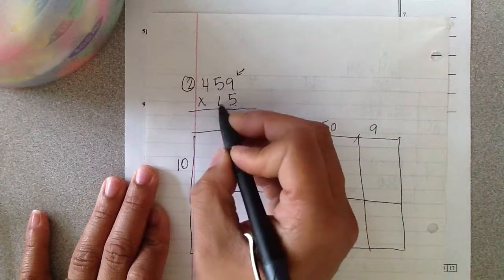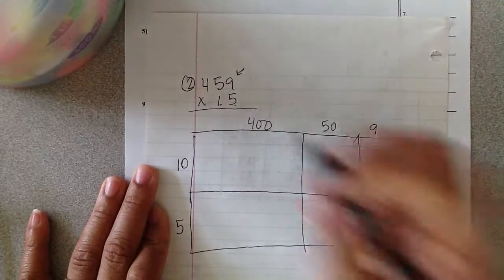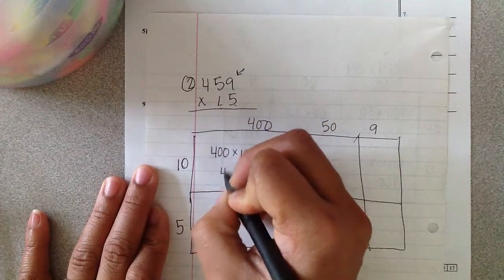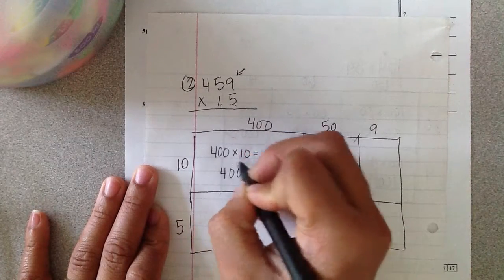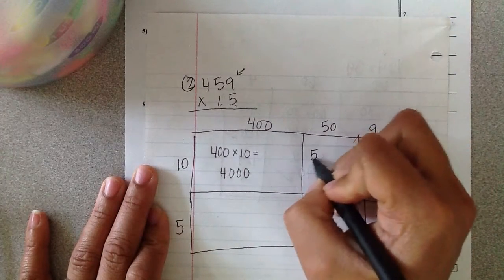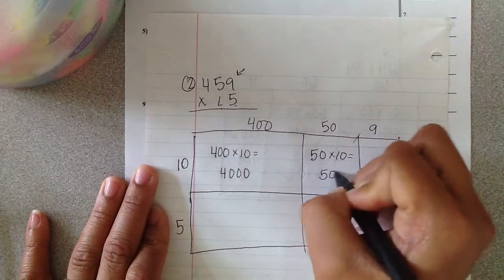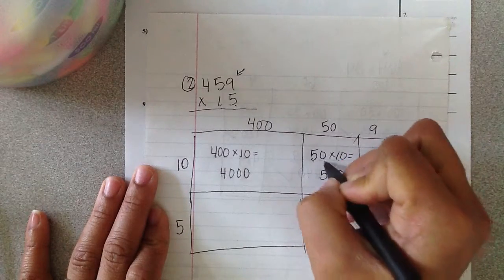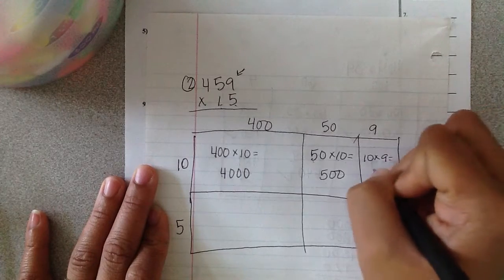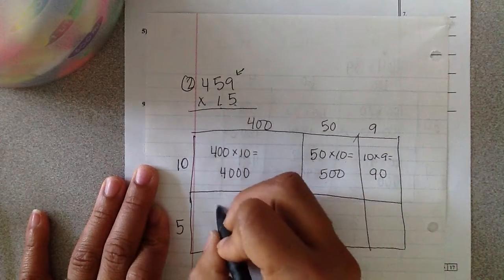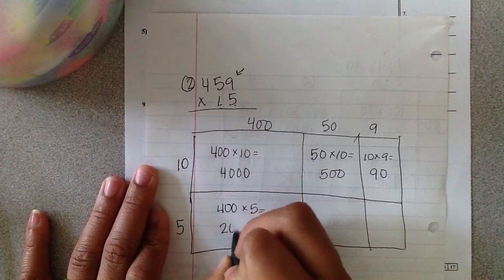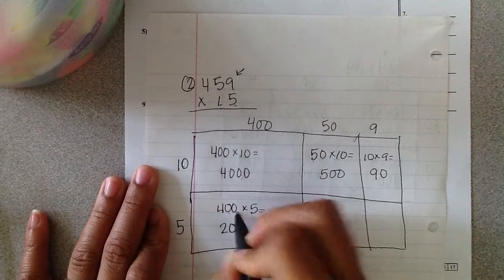Four hundred fifty nine. Over here I'm going to separate it into two sections because I only have two digits here or two place values to cover. So that one represents 10 and the five represents five. Here I have four hundred times ten. That equals four thousand. Four times one is four. And one, two, three zeros. Fifty times ten equals five hundred. Ten times nine equals ninety.